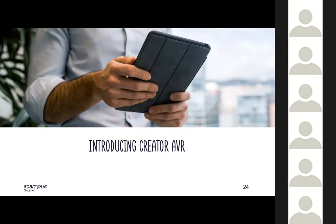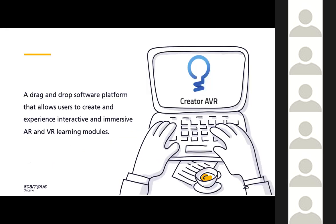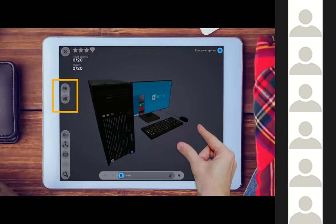Creator AVR can be accessed through a web login or by downloading the app from Google or the App Store. It's a drag-and-drop software platform that allows users to create interactive and immersive AR and VR learning modules using 3D models from the platform's large library or models that you've built or found elsewhere. Users can choose to view the module in mobile web view, in augmented reality, or in virtual reality just by clicking the corresponding buttons. Mobile web view is accessible through PCs, Androids, or iOS devices.